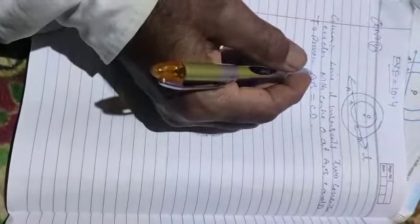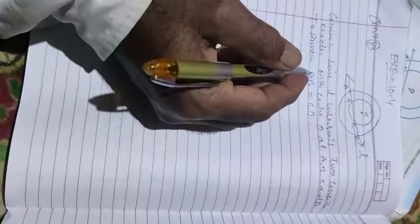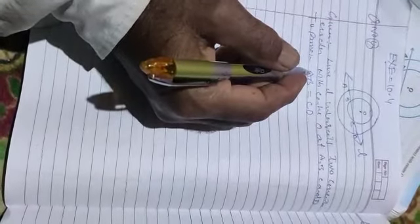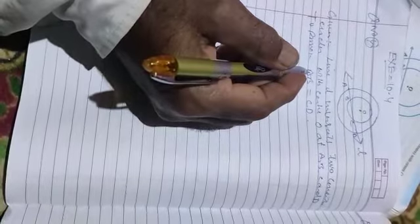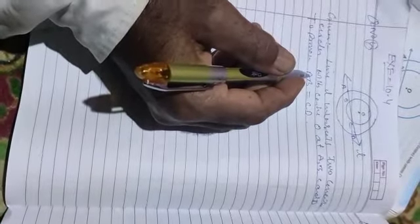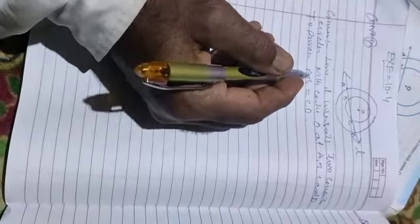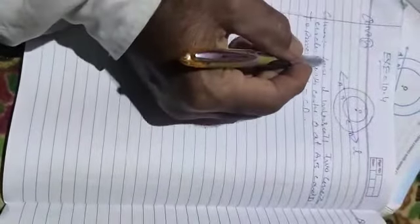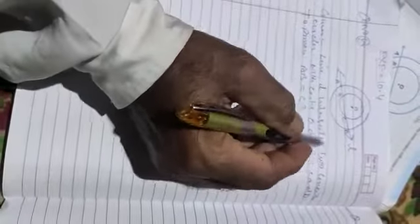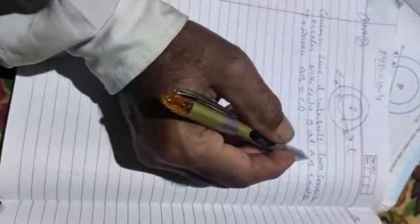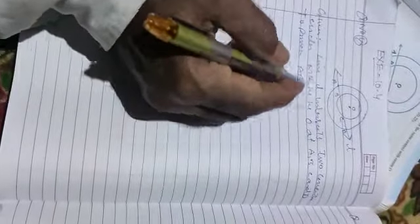The question is: if a line intersects two concentric circles with the same center O at points A, B, C, and D, prove that AB is equal to CD. Given: line L intersects two concentric circles with center O at A, B, C, and D. To prove: AB equals CD.